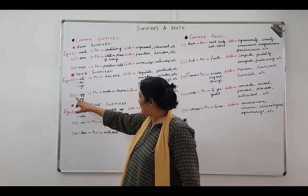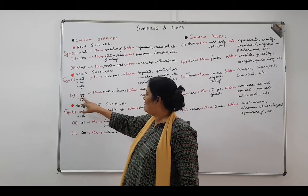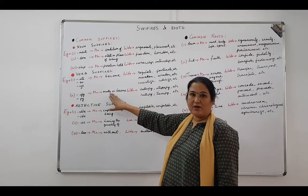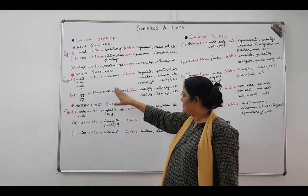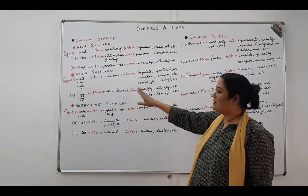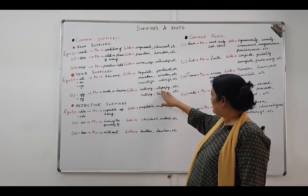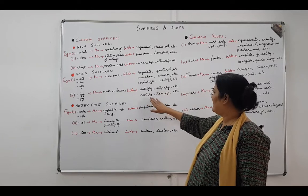And the second one is i-f-y or f-y, and the meaning is make or become, almost similar to this. All of them are verb suffixes. The words: satisfy, stupify, rectify, terrify.